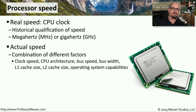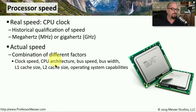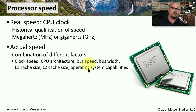Traditionally, we've looked at processor speed to determine how fast a computer might be. But in reality, there are many different components that all work together to determine the speed of a computer. Clock speed is certainly important, but you also have to examine the overall architecture of the CPU, the bus speeds, the bus widths, whether there are any caches that are part of the CPU, and of course how the operating system will take advantage of these capabilities.